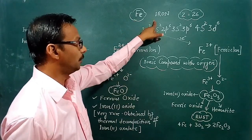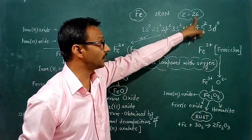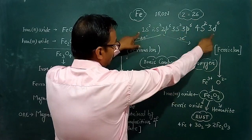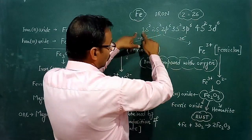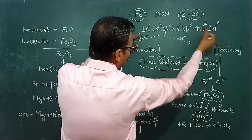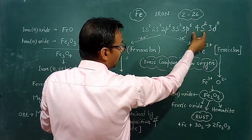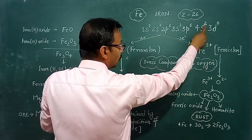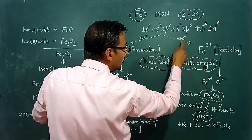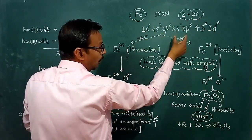Iron is an element with atomic number 26. Atomic number 26 means one atom of iron contains 26 electrons and 26 protons. If we write the electronic configuration using the Aufbau principle, we get a configuration involving the 4s orbital and the 3d orbital, which are at the same energy level.